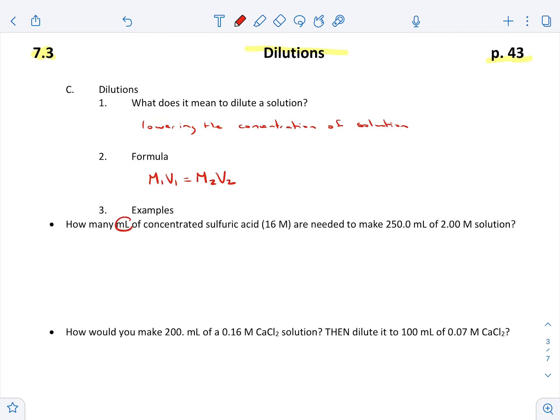So it says how many milliliters of concentrated sulfuric acid at 16 molar are needed to make 250 milliliters of 2 molar solution? So if we kind of go through and assign, this is the first volume I heard about or saw, then we have M1, this is V2, and this is M2.